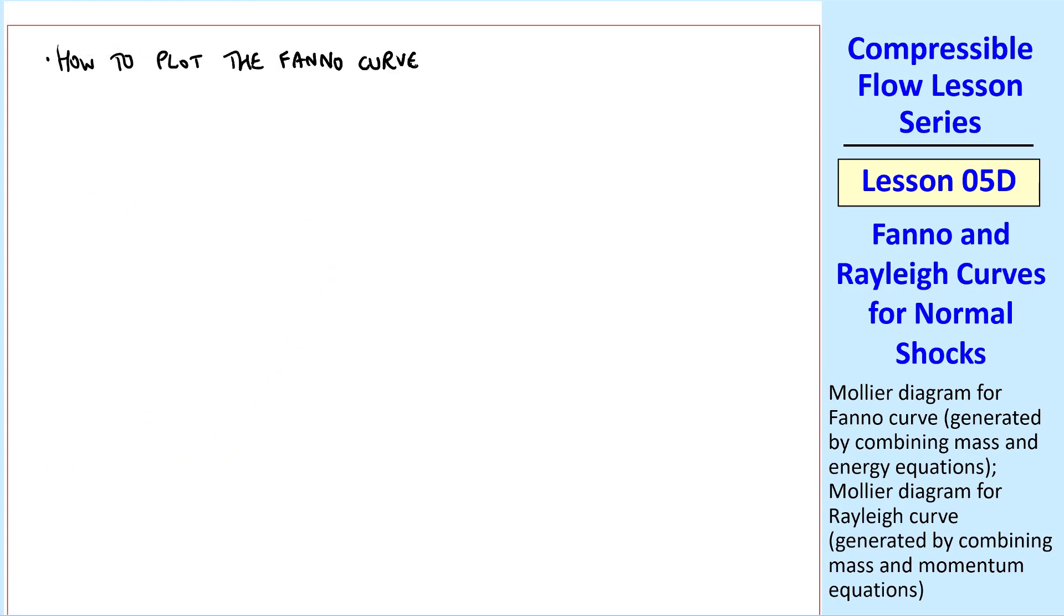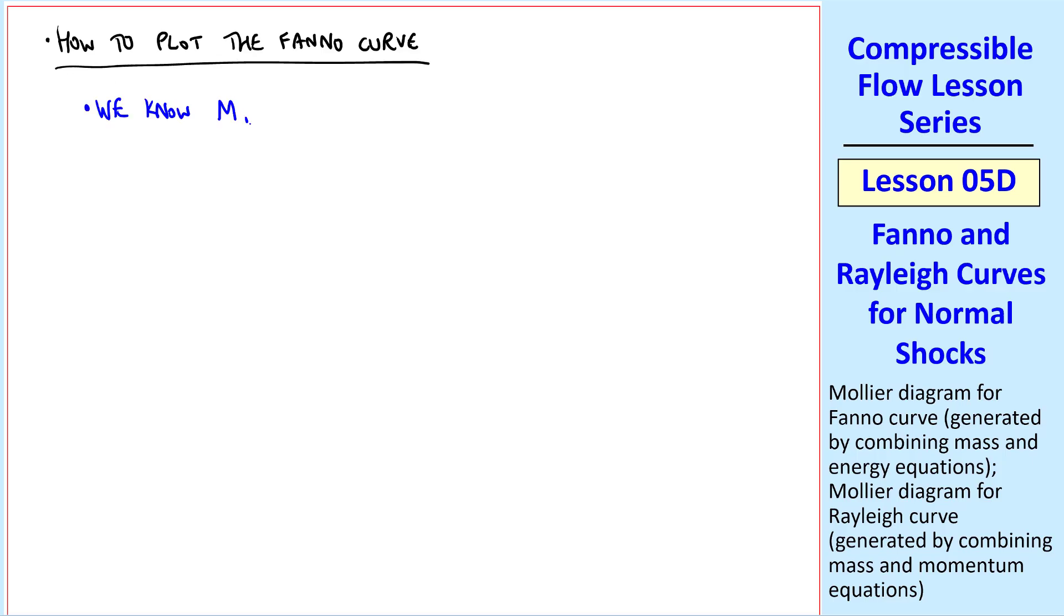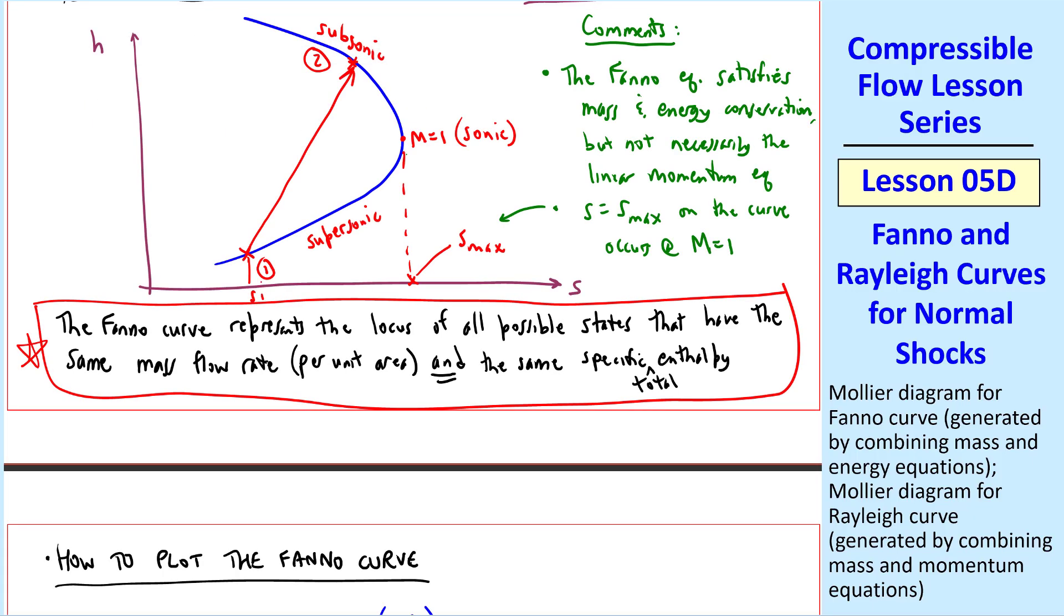How do we plot the Fanno curve? Well I always leave this as a homework assignment for my students. So I'll just give an outline here, but you'll have to fill in a little bit of the algebra. If we start at point 1, where we know M1, T1, and S1, assume this is given, where we have S1 here and H1 here. And of course if we know H1, we know T1. And by the way, you can plot temperature versus specific entropy as well, and the curve will have the same shape, since H is just CPT.